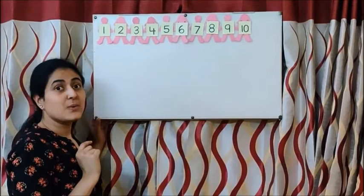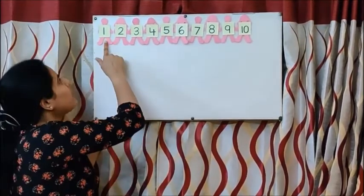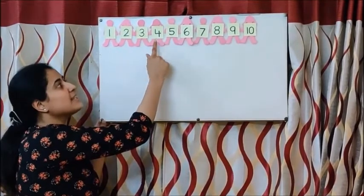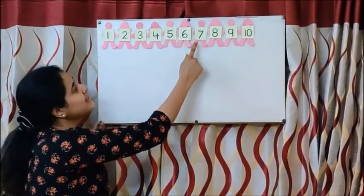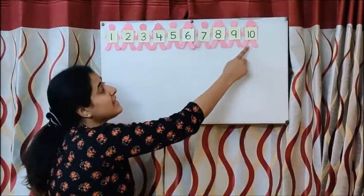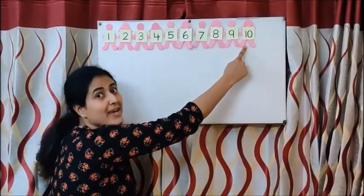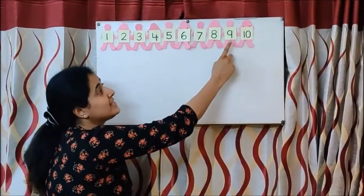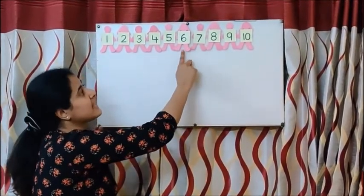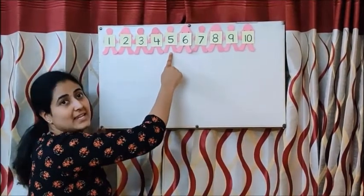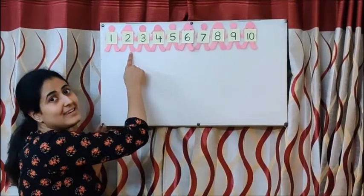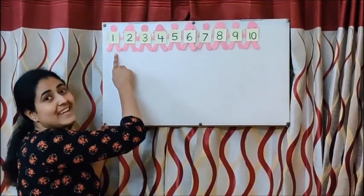So let us sing one more time, and you have to say it with me again: one little, two little, three little Indians; four little, five little, six little Indians; seven little, eight little, nine little Indians; ten little Indian boys. Ten little, nine little, eight little Indians; seven little, six little, five little Indians; four little, three little, two little Indians; one little Indian girl.